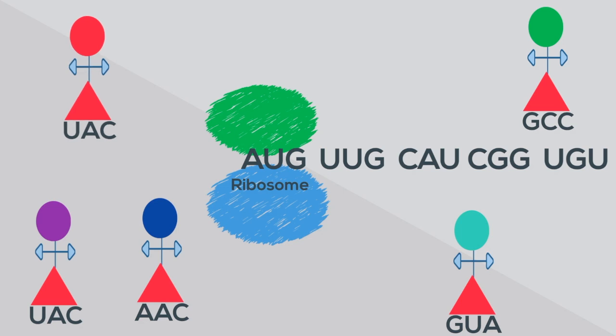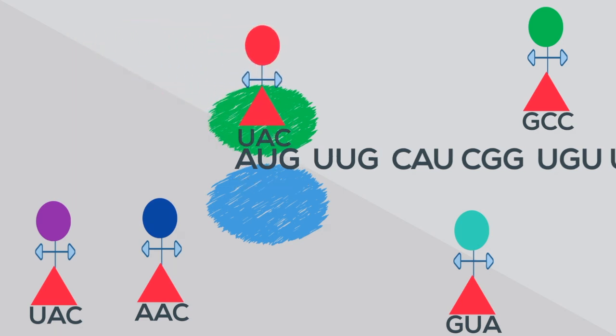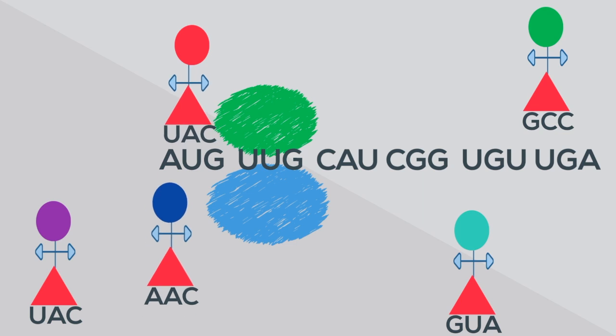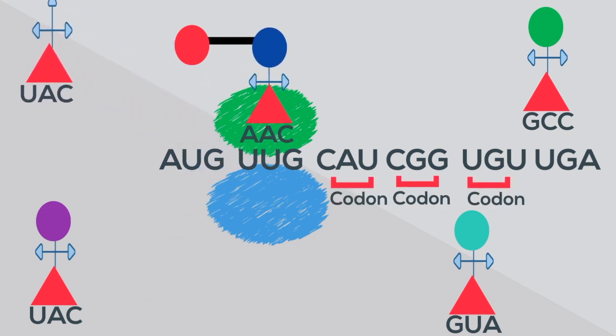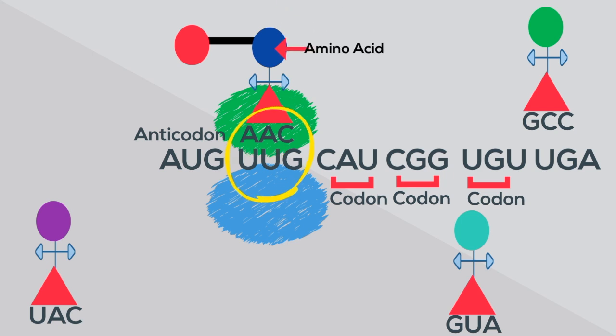At the ribosome, the messenger RNA is read three units at a time. This triplet is called a codon. A transfer RNA has an anticodon which matches with the codon and has an amino acid attached.